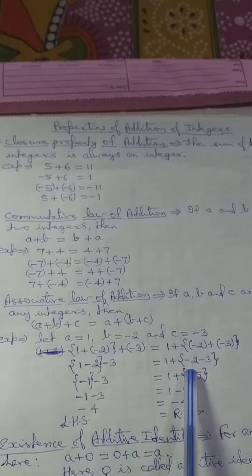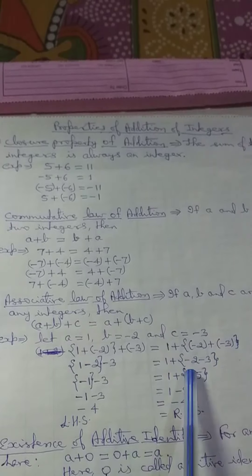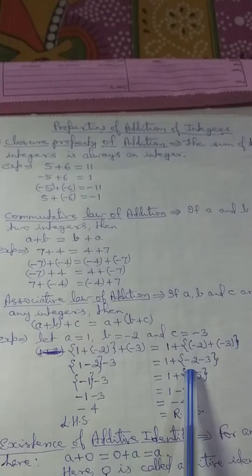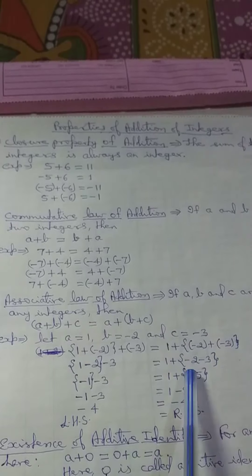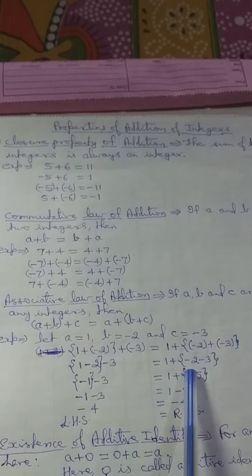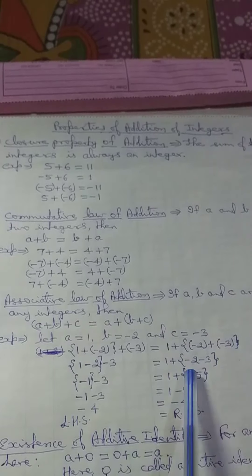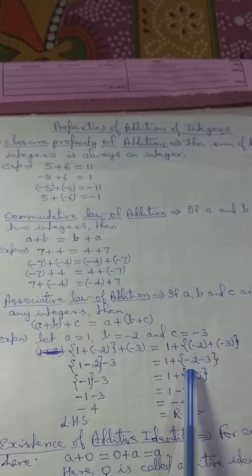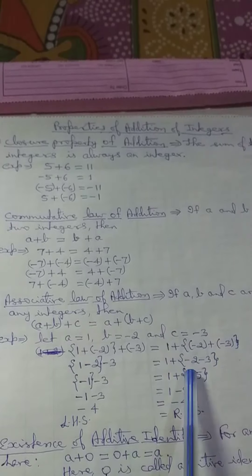Existence of additive identity: for any integer A, we have A + 0 = 0 + A = A. Here, 0 is called the additive identity for integers. Example: when we add 3 + 0, or 0 + 3, both results are 3. So 0 is the additive identity for 3.